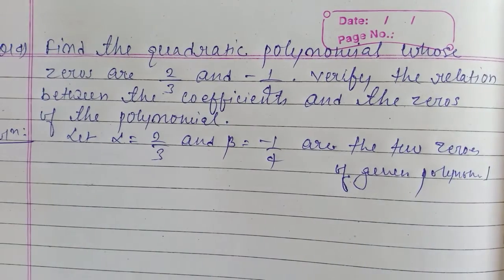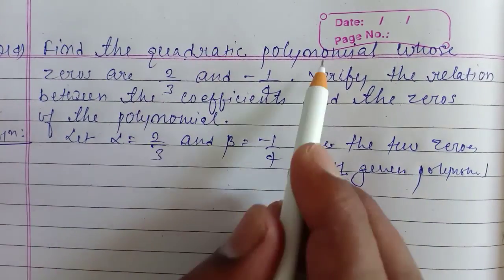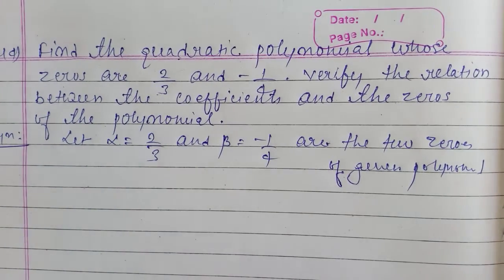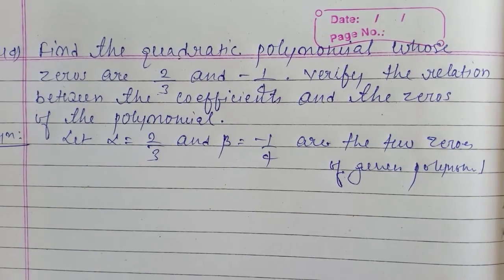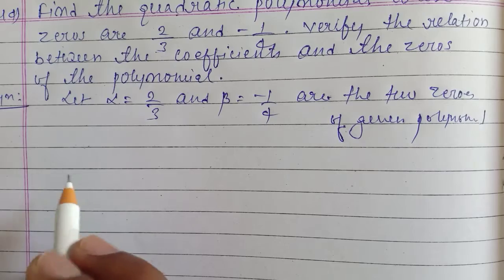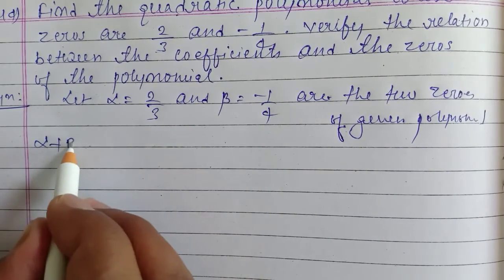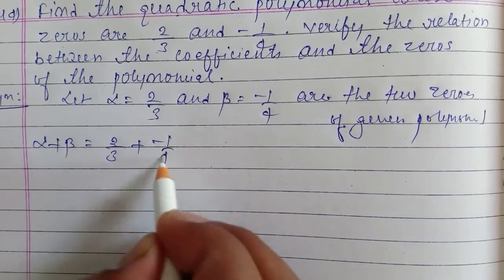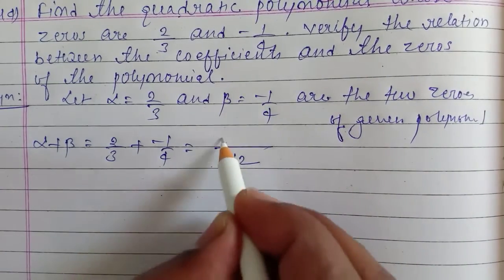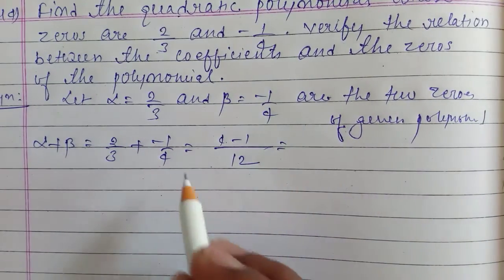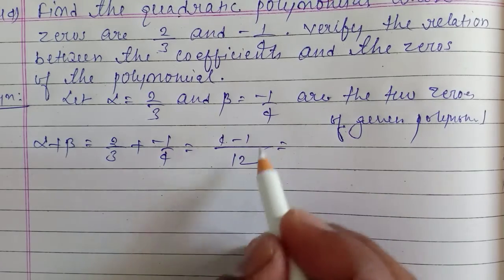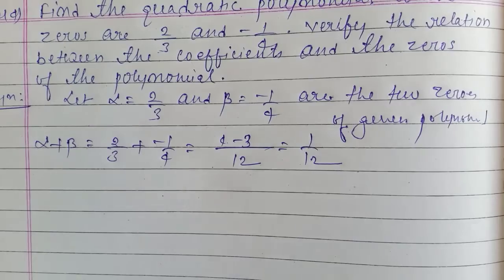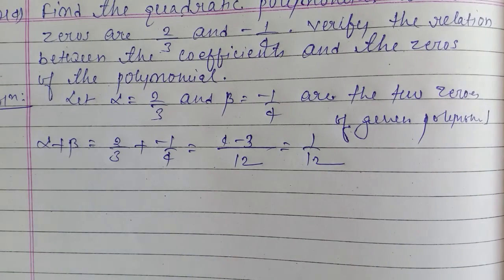Now we will find the sum of zeros, which means alpha plus beta. The sum of zeros, alpha plus beta, equals 2/3 plus (minus 1/4), which gives us 1/12.